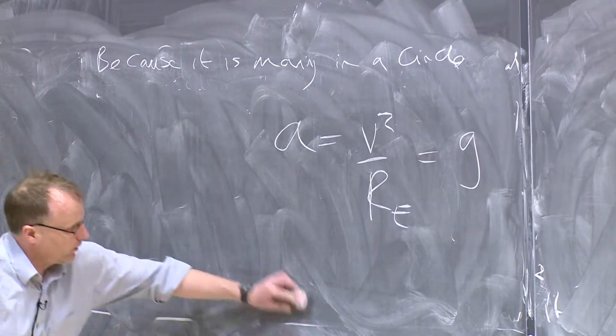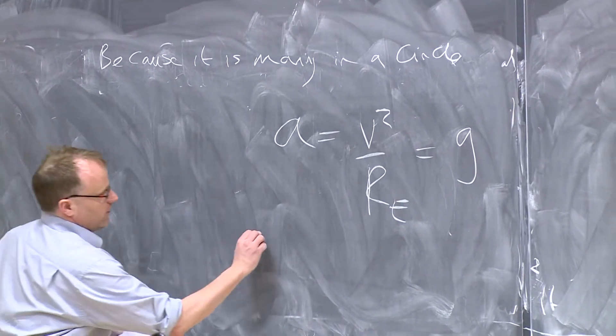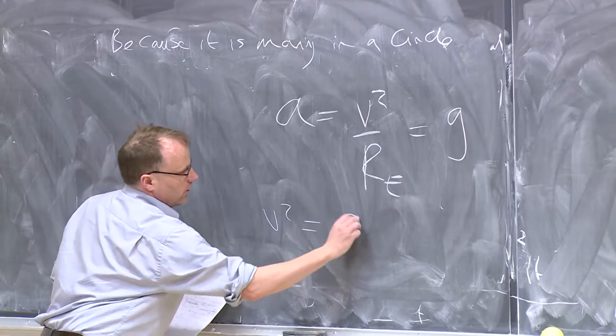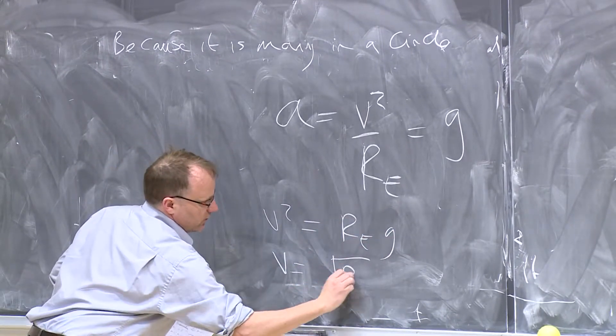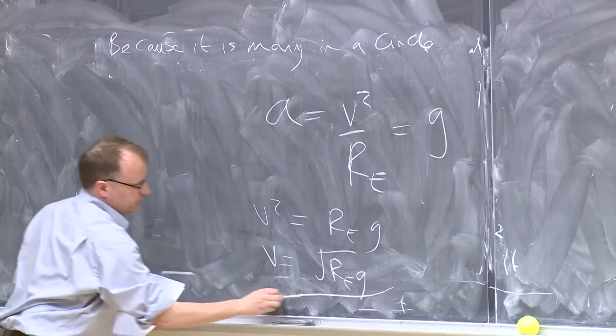So then you have a simple way of figuring out V. So you could say V squared equals RE multiplied by G, which gives you V equals square root of RE times G.